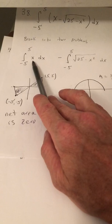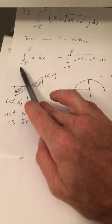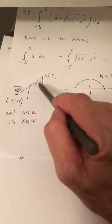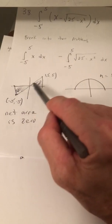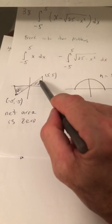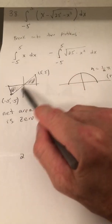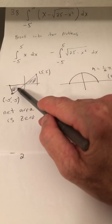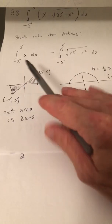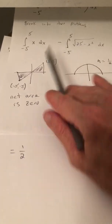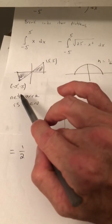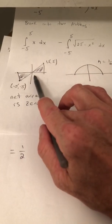So we're still going to interpret this in terms of areas. So we're going to graph y equals x from negative 5 to 5. So what you have here is actually two equivalent triangles. The areas are the same. So one of them is below the x-axis, the other is above. So the areas are going to cancel out. So the net area is 0 for this integral.